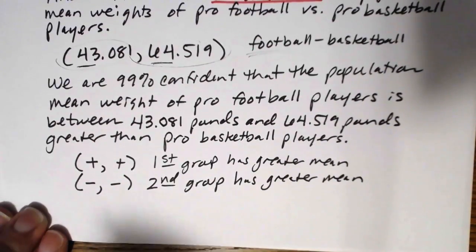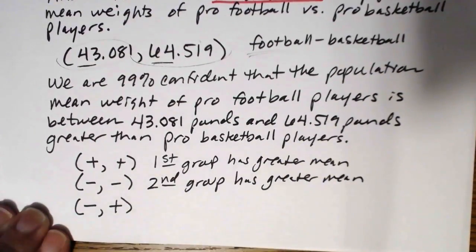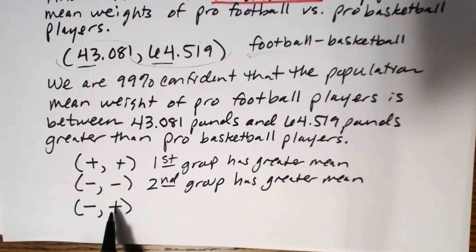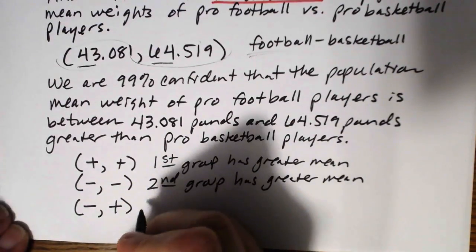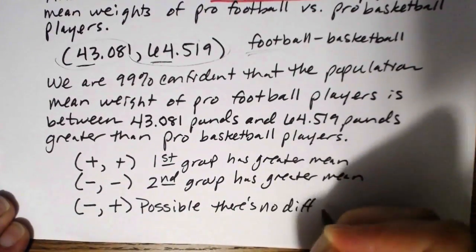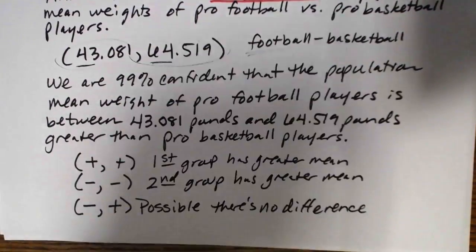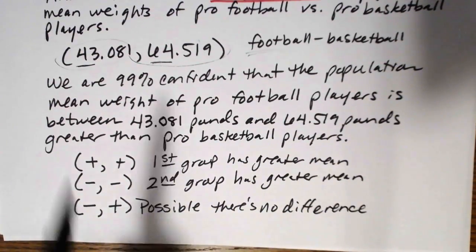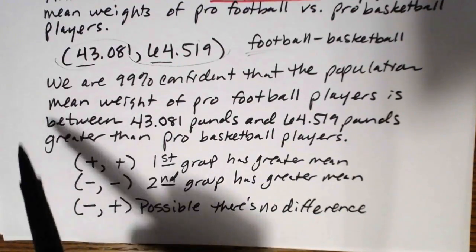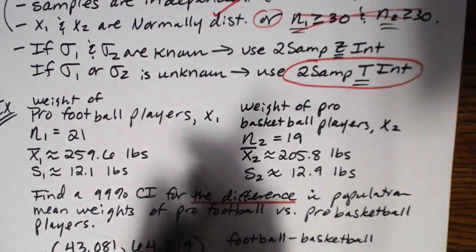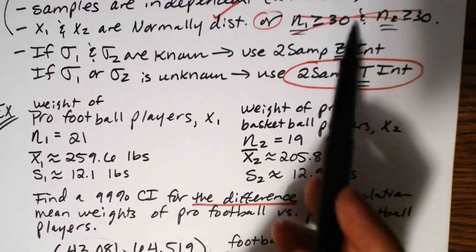The numbers tell you by how much. It is also possible to get an interval ranging from negative to positive: at the low end the difference is negative (second group has greater mean) and at the high end it's positive (first group has greater mean) — meaning we really can't say there's a difference. So those are the three cases: all positive (first group greater), all negative (second group greater), or mixed (no clear difference). If we had known both sigma values, the only difference would have been using 2-samp Z instead of 2-samp T.